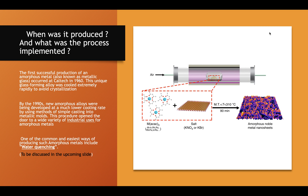In this slide, a picture shows one of the processes used to produce amorphous metals. You have 3M elements and salt — it can be KNO3 or KBr. The temperature should be less than 310°C and it should be heated for about 90 minutes, and you'll have your amorphous metal nanosheets.